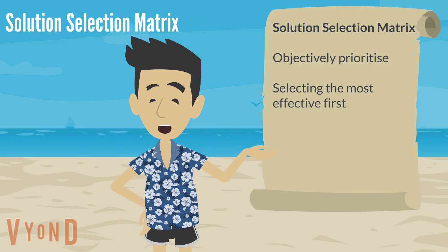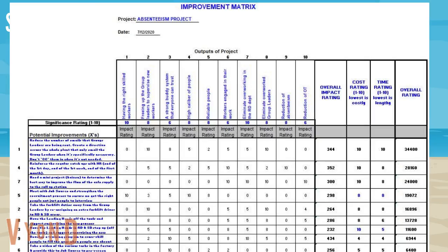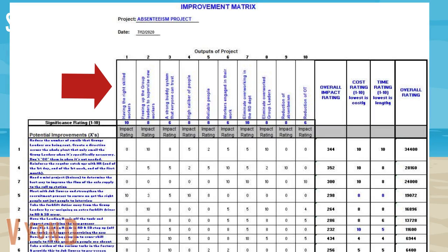Here's an example of the matrix, and it's completed by a series of steps which I'll take you through one by one. Step one: list all the potential solutions down the left-hand side column. Step two: list all the success criteria or the necessary outcomes across the top row.